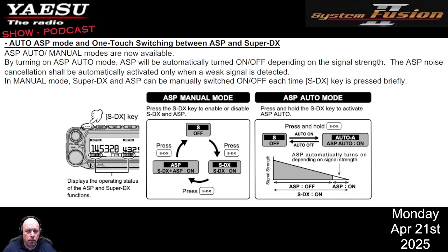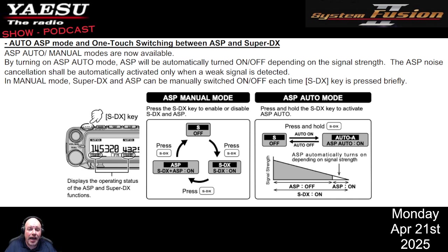In auto mode, instead of pushing the button to toggle through states, you push and hold the SDX key. By activating ASP auto mode, it will monitor the signal strength coming in to the receiver. Once it deems the signal at a certain level, the ASP will turn on to function properly. Once the signal strength rises again, it will deactivate or turn itself off — with no intervention from you, other than that initial push-and-hold.